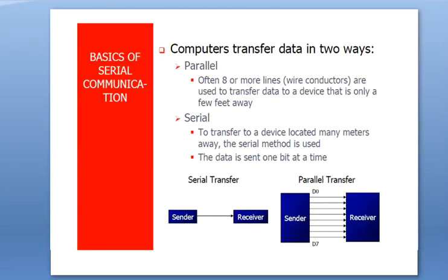Next we are going to discuss the continuation of the fourth module: serial communication. There are two common types of communication — serial communication and parallel communication. In parallel communication, different parallel links are provided between sender and receiver, so the sender can send each bit of data directly without interruption. In serial communication, only a single channel is provided.